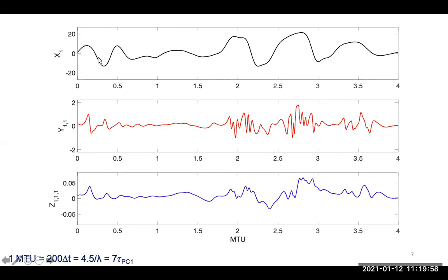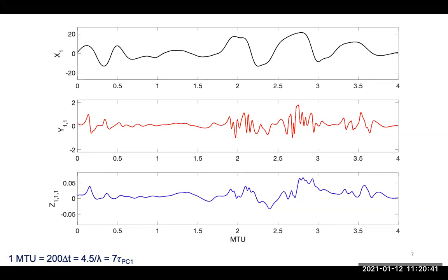Looking at the time evolution of a grid point of x, y, and z: x is slow moving with smaller temporal frequency; y is fast moving and intermittent; z is even smaller and faster. x has amplitude roughly ±20, y is an order of magnitude smaller, z is even smaller. The system has been integrated numerically with a fourth-order Runge-Kutta solver at 200 delta t. The Lyapunov exponent is about 4.5 — related to the decorrelation time of the system. It's a fairly chaotic system with three spatial-temporal scales that are separated in this example, which is a good starting point.